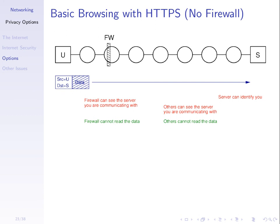So HTTPS gives confidentiality of data but nothing else. How can we do better? I want to hide who is communicating and even hide myself from the server, but still access that server. One technique is using a proxy — someone who acts on your behalf. Normally when we contact a server we send the request directly to it. With a proxy, you send the request to someone else who then sends it on to the server on your behalf. There are different styles of proxies, but we'll look at the case of a web proxy.